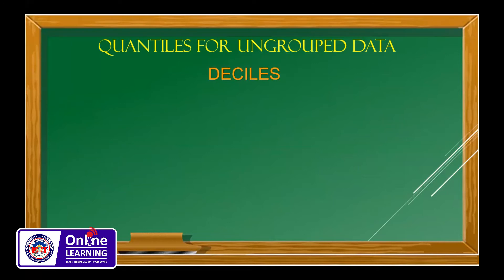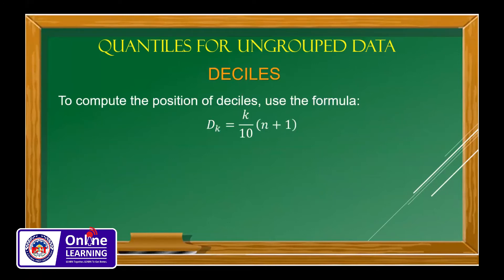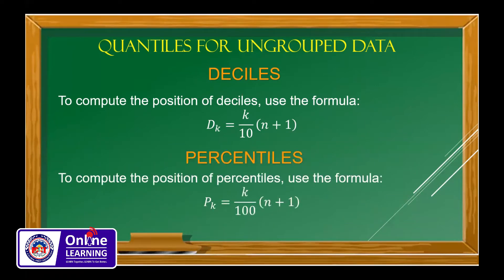To compute the positions of deciles, we use the formula D sub k = (k/10) × (n + 1), where k is the decile being asked. For percentiles, we use P sub k = (k/100) × (n + 1). These are the formulas to get the deciles and percentiles for ungrouped data.